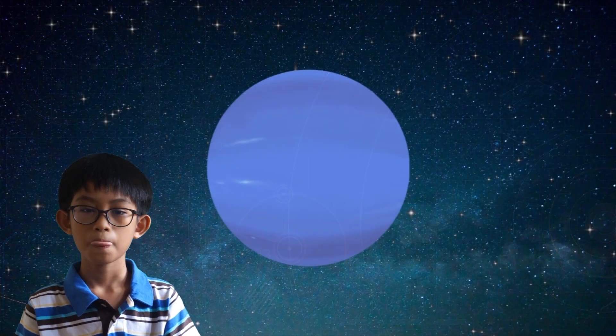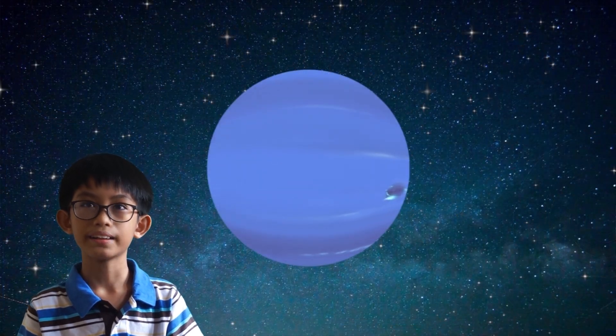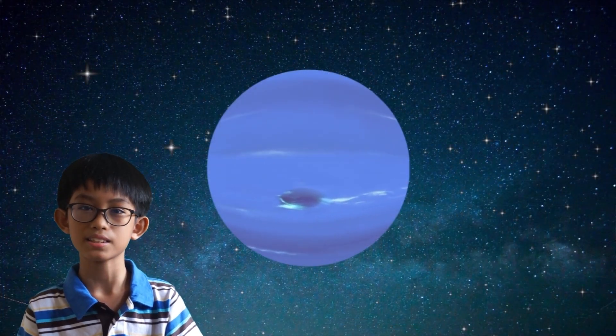Neptune is the eighth planet from the Sun. It is a dark blue color and it is the windiest of all the planets in the solar system.